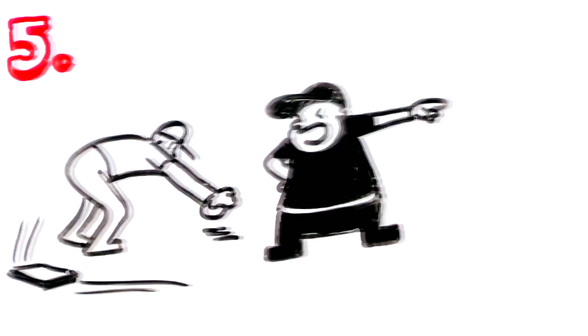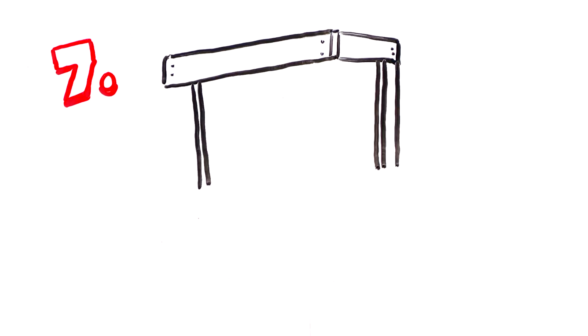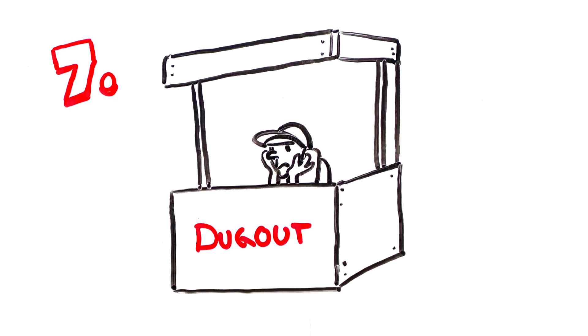No kidding, right? Follow the umpire's code when addressing them on field. If a pitcher gets pulled, they should stay in the dugout, at least until the end of that inning.